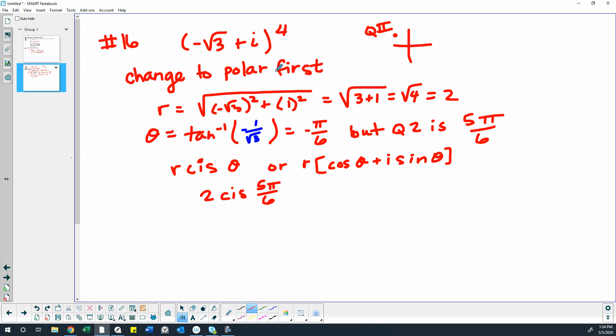Okay, so now what we're doing is we're going to use DeMoivre's theorem. So now it's theorem time. So we have this is our polar form to the fourth power.